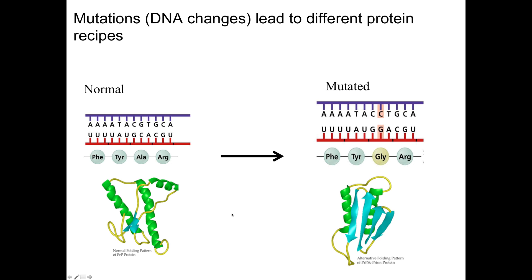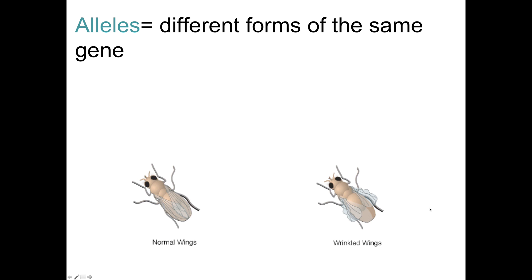Mutations can lead to changes in those gene recipes. Looking at a point mutation, we've got a little section of chromosome with amino acids coded for it. If we change a nucleotide, that will change the amino acid, which will change the shape of the protein. So if you have a change in the DNA, you will end up with a change in your trait. We call those different forms of genes alleles. If you have the regular form you would have normal wings, but if you had a mutated allele you would end up with wrinkled wings.